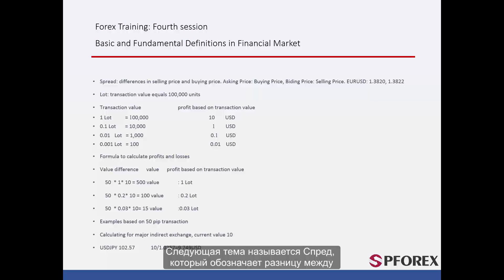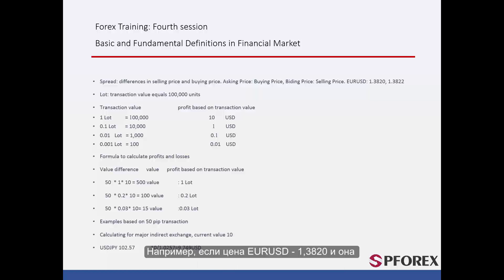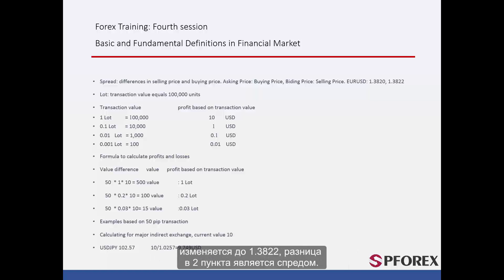The next subject is called the spread, which means the difference between the buying and asking price as well as the selling and bidding price. For instance, if the price of EURUSD is 1.3820 and it changes to 1.3822, the 2 PIP increment is the spread.